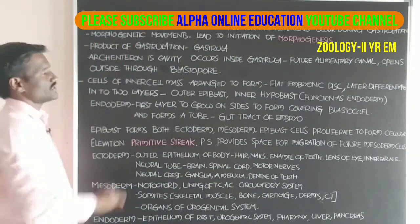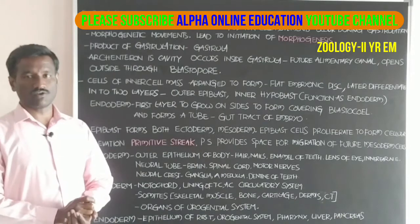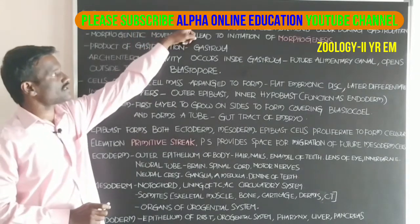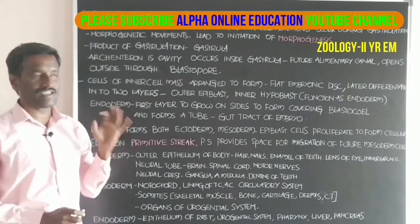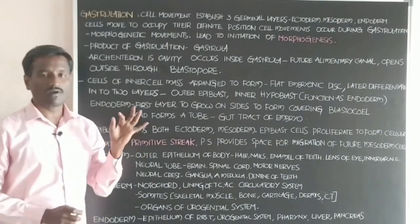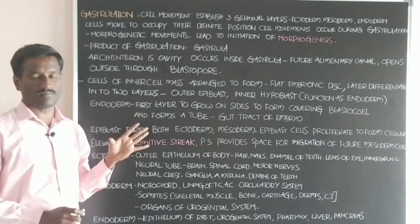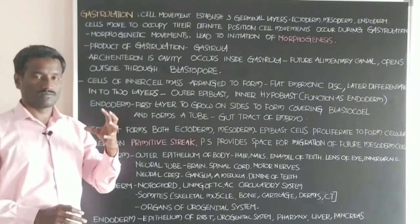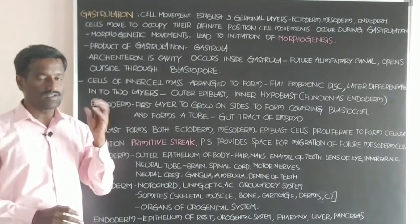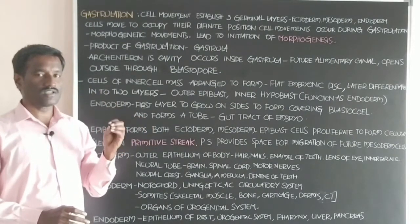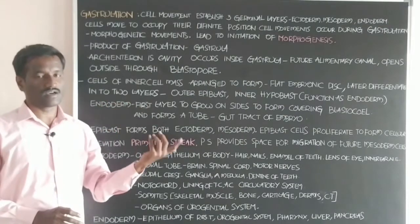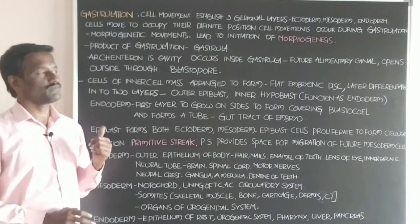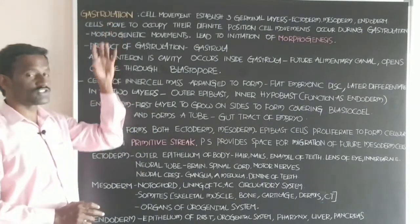I will discuss about gastrulation, the embryonic development. Gastrulation involves cell movement to establish three germinal layers, which are called ectoderm, mesoderm, and endoderm. The blastocyst develops into the embryonic disc, and the embryonic disc undergoes the next sequential development that is called gastrulation.